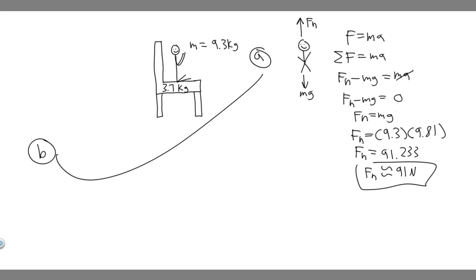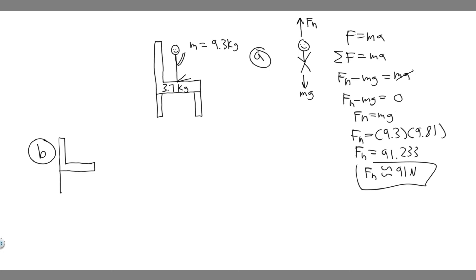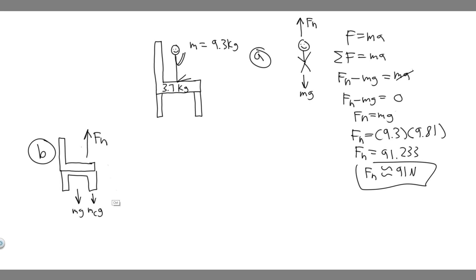I'll go through part B a bit quicker since I basically explained everything in A. This time we're doing the chair. For the chair, we're going to have a weight force mg, obviously. We're also going to have a normal force F sub N because it's touching the ground — the ground pushing back against the chair. But we also have the force of the child sitting on it, exerting a force downwards. That force is going to be the weight of the child, so mass of the child times g, because there's another force as the result of the child sitting on the chair.